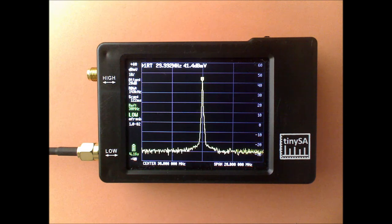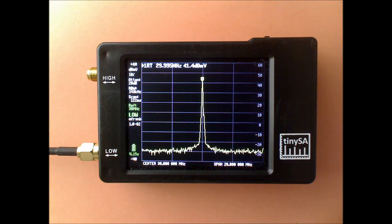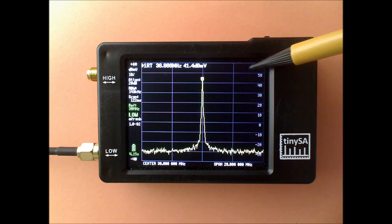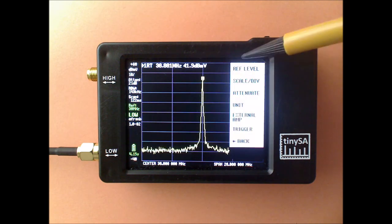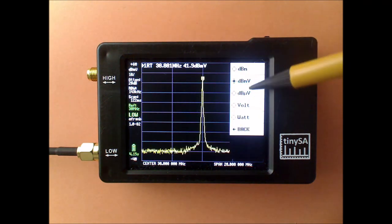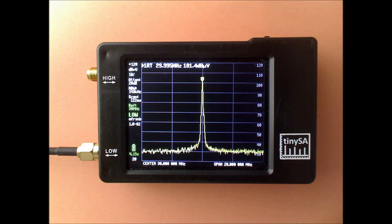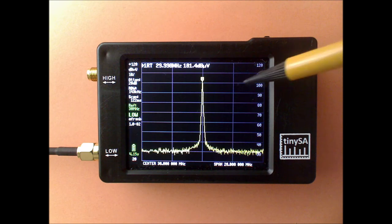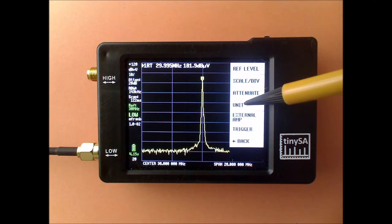The dBmV is just the scaling, the shifting of the levels, and it behaves very much like the dBm. And also the dB microV is again the shift of the level, so very similar behavior.